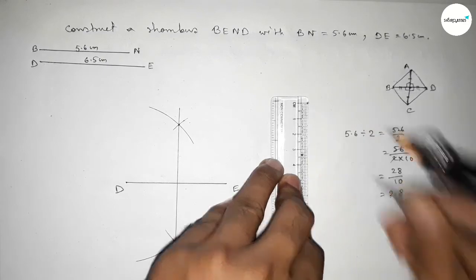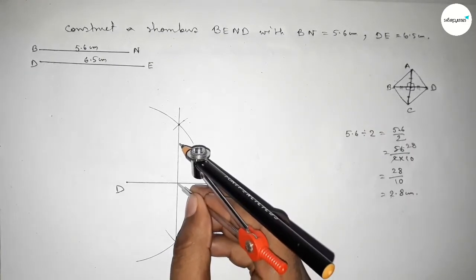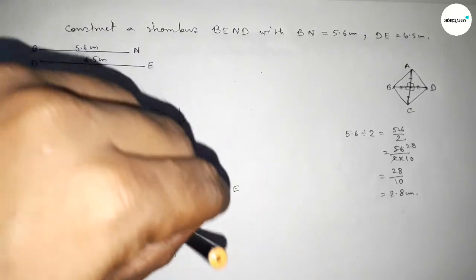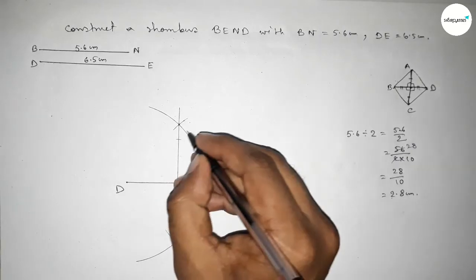Now putting the compass here and cut here equally, cut here. Taking point B here and N here.